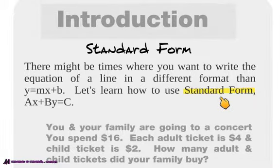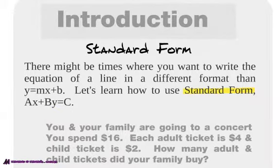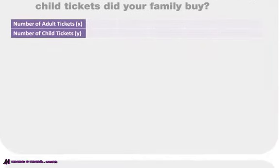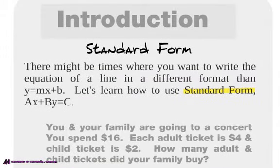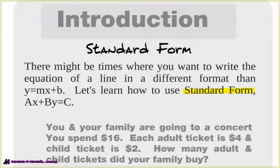It's going to be called the standard form. We're going to be using that from here on out, where a, b, and c are numbers. Let's look at this example. You and your family are going to a concert, and you spend $16. Each adult ticket is four bucks, and each child ticket is two. How many adult and child tickets did your family buy? First we have to write an equation, and this one is much easier to write using the standard form than y equals mx plus b.